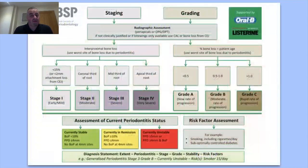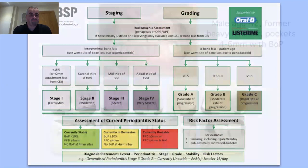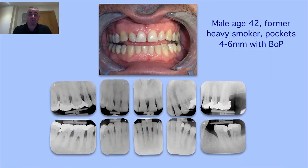You'll all be familiar with the BSP's flowcharts. If you haven't got one, you can request them from the BSP — they'll post them out post-COVID once everything returns to normal. These are very useful for holding your hand through the classification process.